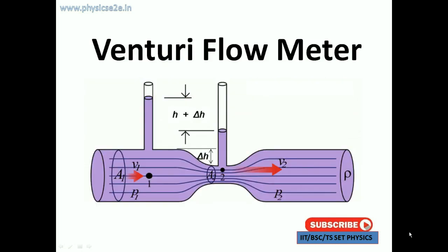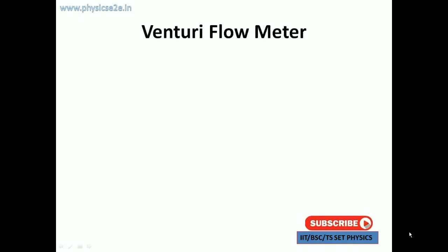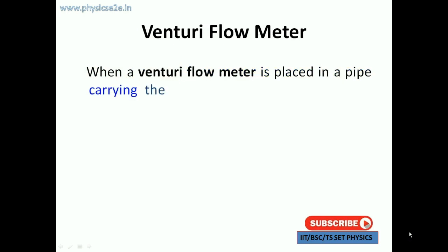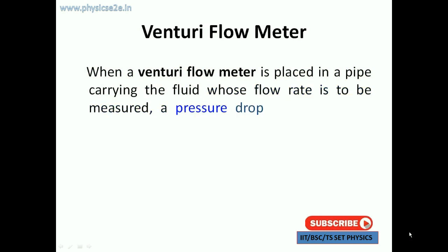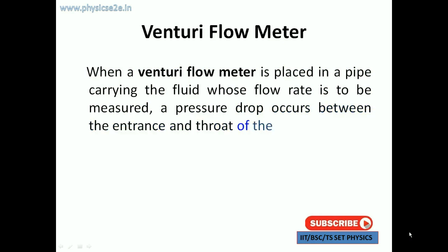Venturi flow meter part 2. The Venturi flow meter is a mechanical type flow meter and it is a variable pressure type flow meter. When a Venturi flow meter is placed in a pipe carrying the fluid whose flow rate is to be measured, a pressure drop occurs between the entrance and throat of the Venturi flow meter. Similar to an ammeter placed in a circuit in series, the Venturi flow meter is also placed in series type in the pipeline.